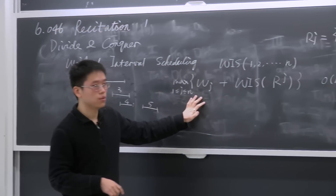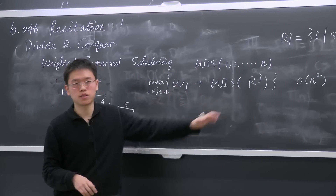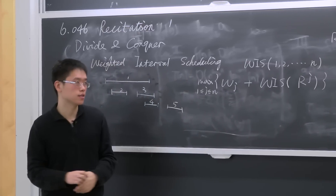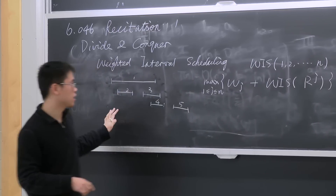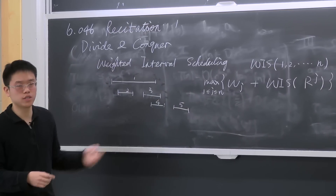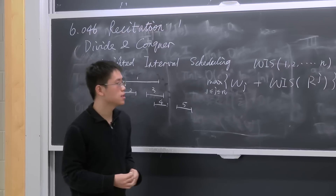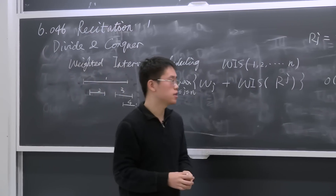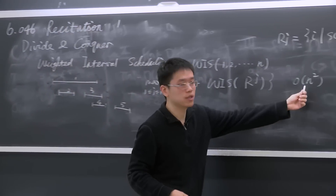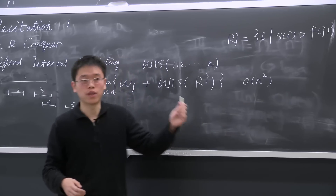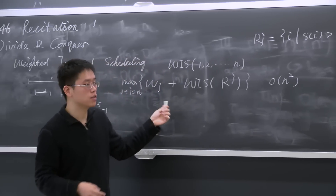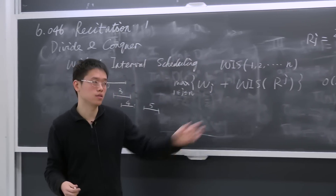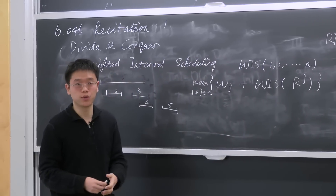Even after Andrew's optimization the runtime is O(n²). Without memoization — solving repeated sub-problems — it would be far worse than that.